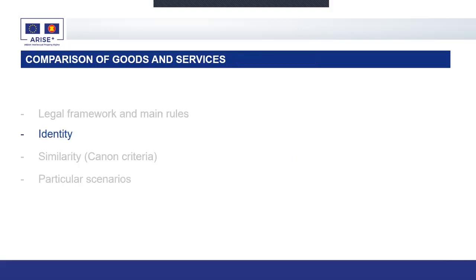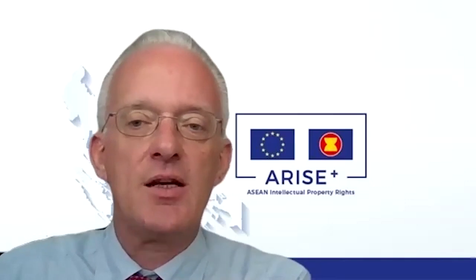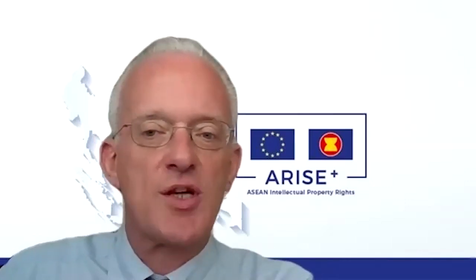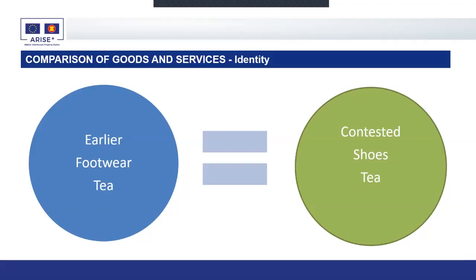This assessment leads to two possible outcomes: identity or similarity. Identity is relatively straightforward. For example, if an earlier sign has the term 'footwear,' this is identical to 'shoes' — it doesn't matter that the terms are not the same. Identity is defined as being the same in substance, composition, nature, properties, or qualities under consideration. We don't need to apply similarity factors; identity is just identity.